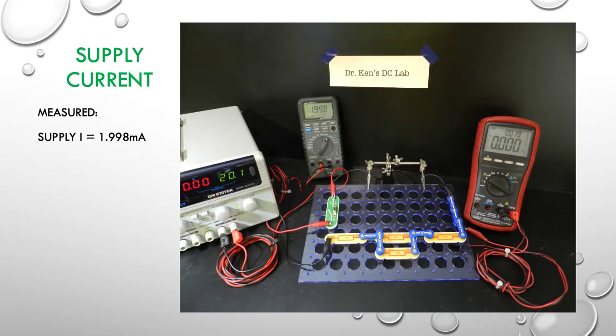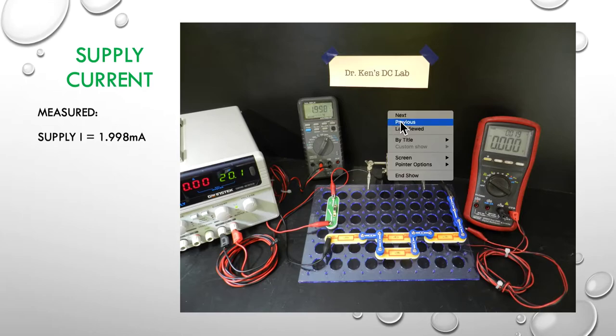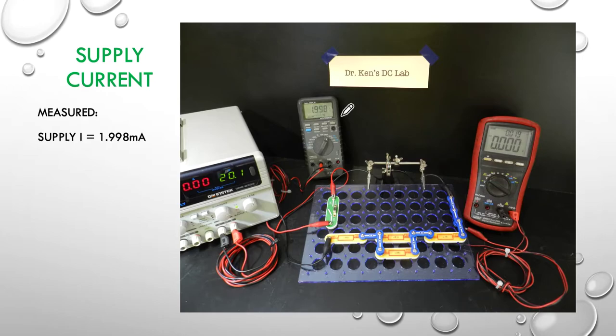Next is to look at the supply current. You can see here I've now closed the circuit and our ammeter is operating. The voltmeter is now disconnected. We're just measuring the current, and it's measuring at 1.998, very close to 2 milliamps. You can see I took the link out of this spot and inserted the ammeter in series here.